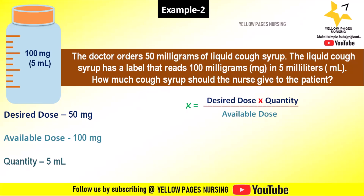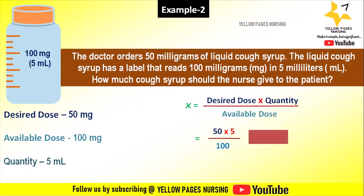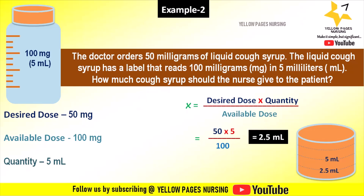Using the formula x equals desired dose multiplied by quantity divided by available dose — that is 50 multiplied by 5 divided by 100 — which gives the answer 2.5 ml. So the nurse will be administering 2.5 ml of the cup syrup.